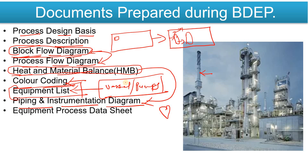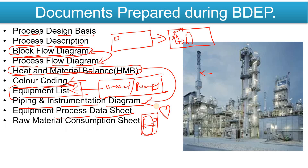After that you prepare the Equipment Process Data Sheet for each piece of equipment. For example, for a vessel you will provide information about the nozzles, dimensions, applicable codes, design temperature, design pressure, and operating temperature. This process data sheet is prepared by the process engineer.